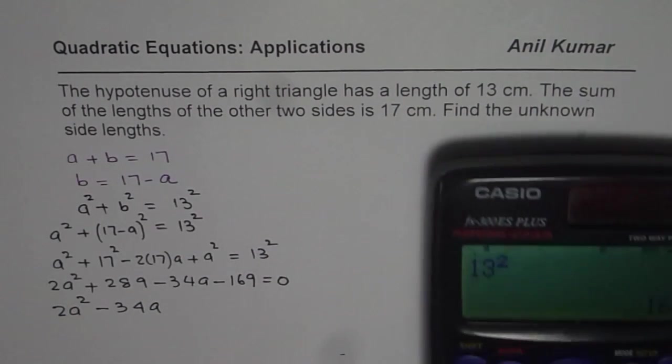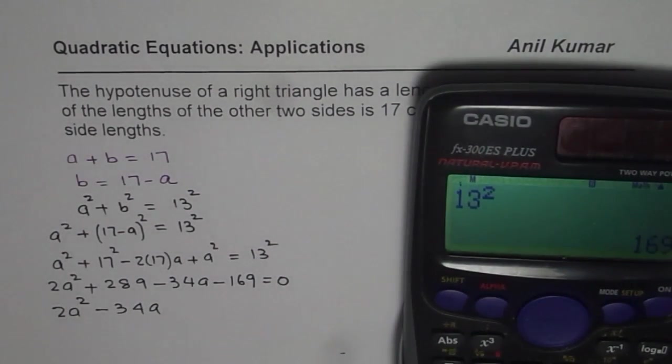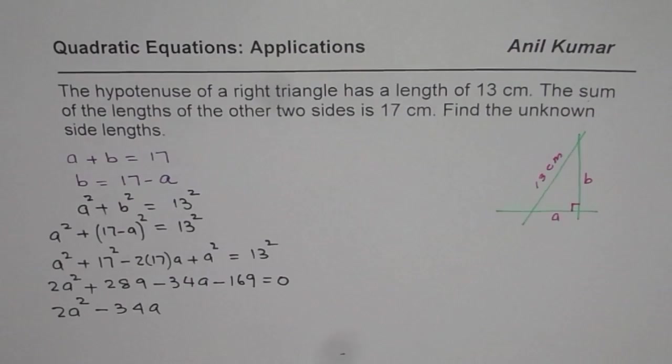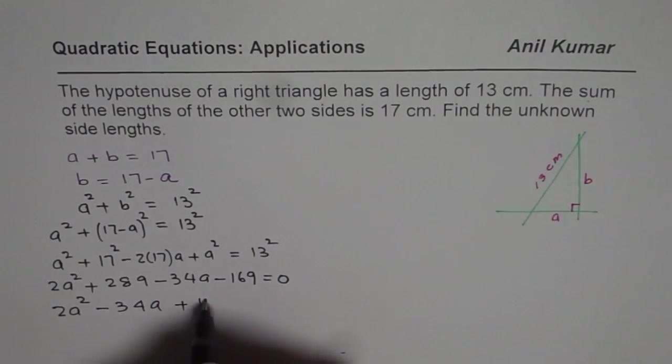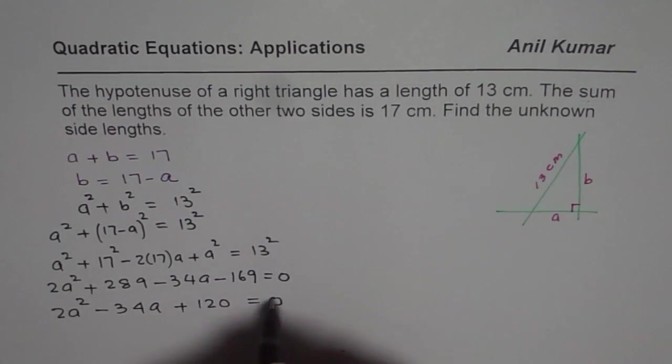And let us combine 289 and minus 169. 289 minus 169 is equals to 120. So we get plus 120 equals to 0.